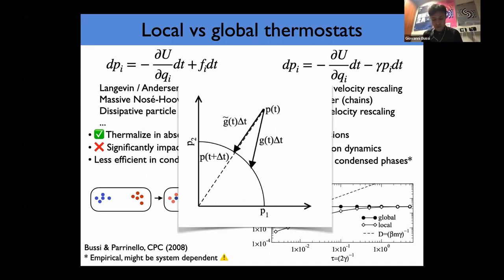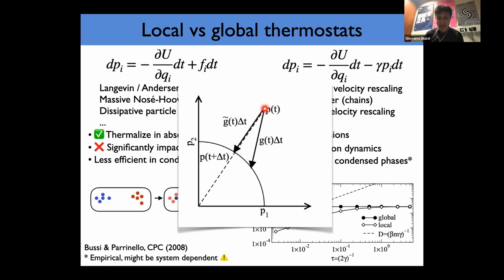One way to understand the smaller impact on dynamics is by looking at the momentum as a high-dimensional vector — say 300-dimensional for 100 particles. A local thermostat could move the momentum vector anywhere. A global thermostat would only scale it in one direction — the change in momentum is proportional to the momentum itself. This amounts to a scaling operation in very high dimensionality: you move in one direction and do not move in 299 directions. You basically remove all velocity changes that lead to energy transfer between particles, keeping only changes in the global kinetic energy. That is what a global thermostat does.